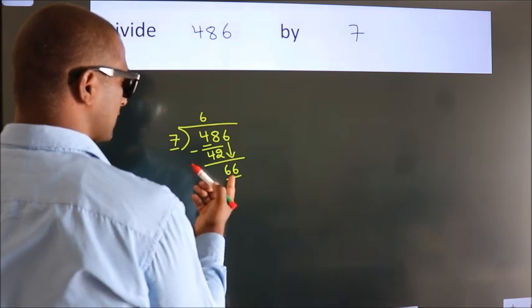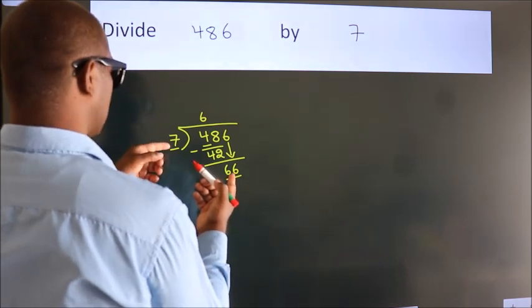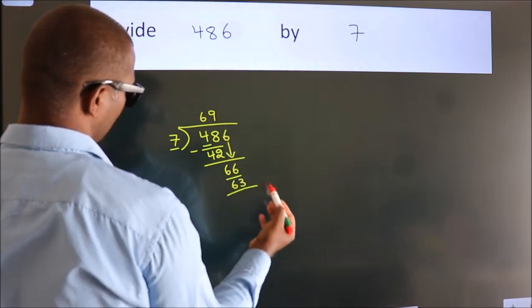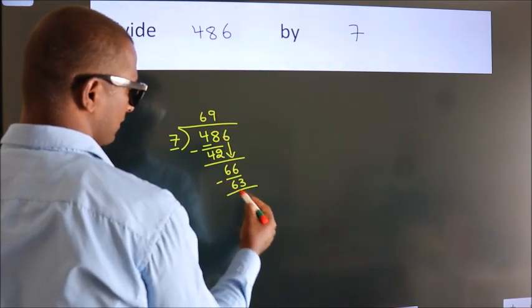A number close to 66 in 7 table is 7, 9, 63. Now, we subtract. We get 3.